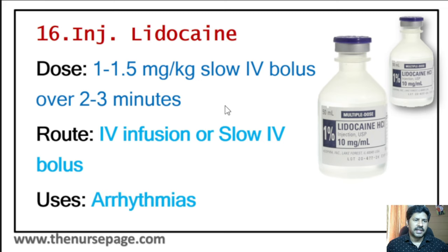Thirtieth injection is calcium gluconate. Emergency uses include treatment of hyperkalemia, hypocalcemia, and certain drug overdoses including calcium channel blockers. Route is IV injection or IV infusion. Dosage is 1 gram (10 ml of 10% solution) IV over 5 to 10 minutes, repeated as necessary.